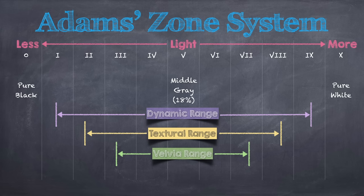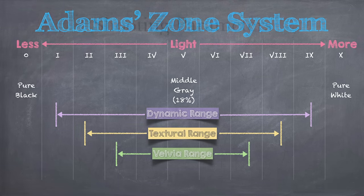In addition, Velvia is a high contrast film that will exaggerate high contrast scenes, which can be very frustrating as I learned early on. Let's take a look at some examples of images I've taken over the years that illustrate the lack of the film's latitude.